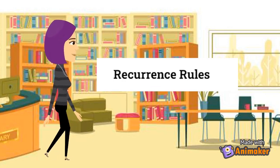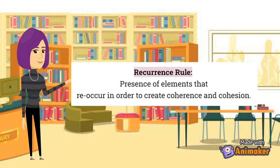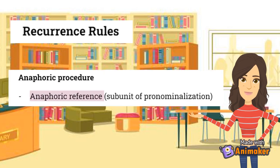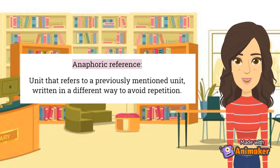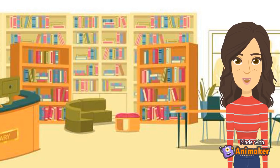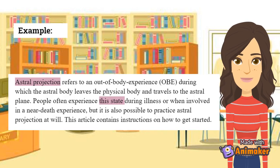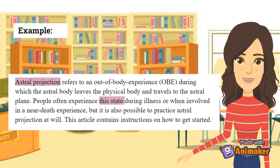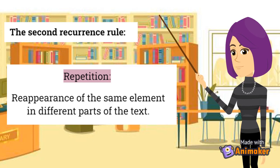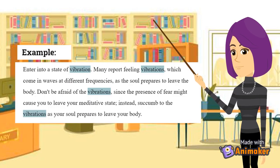Now let's move to the next object of our analysis, which corresponds to the recurrence rules. A recurrence rule is the presence of elements that reoccur in order to create coherence and cohesion. The first recurrence rule we can identify is an anaphoric procedure, corresponding to the subunit of pronominalization, specifically an anaphoric reference — a unit that refers to a previously mentioned unit, written in a different way to avoid repetition. For example, the subject "astral projection" is later replaced by "this state." The second recurrence rule is repetition, which is the reappearance of the same element in different parts of the text. Here we have an example of the word "vibration" being repeated several times throughout the paragraph.